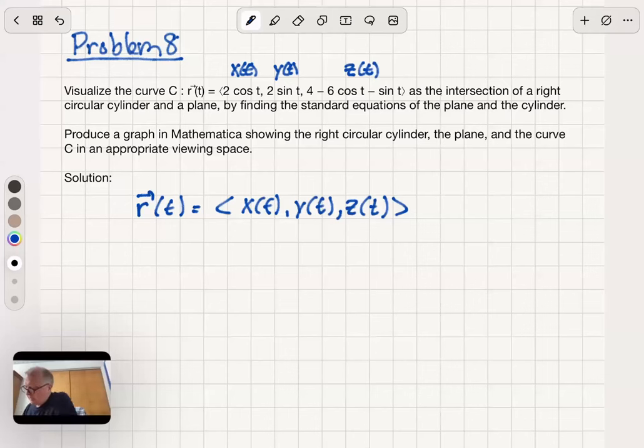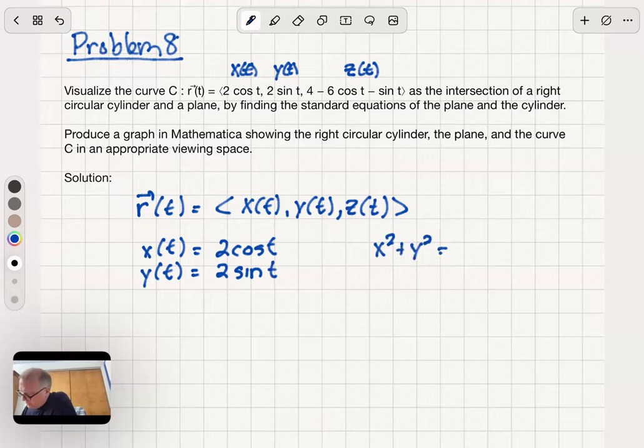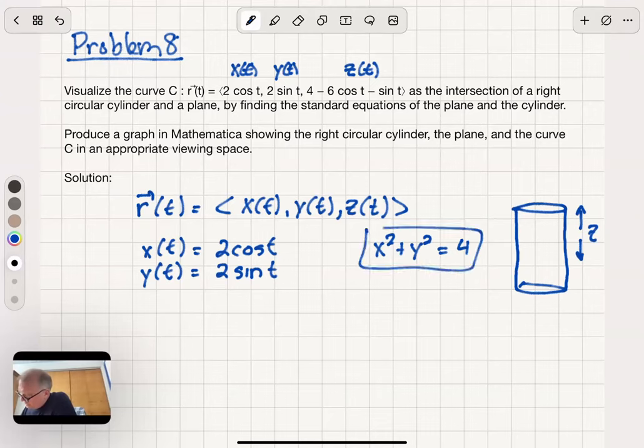Now let's look at the x of t and y of t coordinates, the 2 cosine t, 2 sine t. Now trigonometry says that's a description of a circle. Circle of radius 2 because x squared plus y squared is equal to 4. Now for us that's not just a circle in the plane, but if we think of z as taking any value we wish, we could think of that circle as sliding up and down the z-axis, infinitely in fact. And so this is the equation of a right circular cylinder.